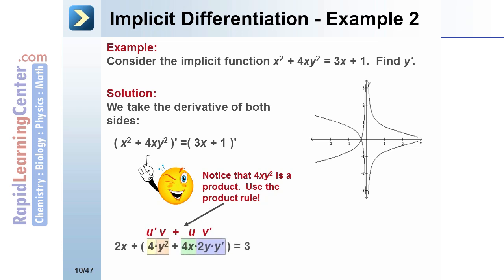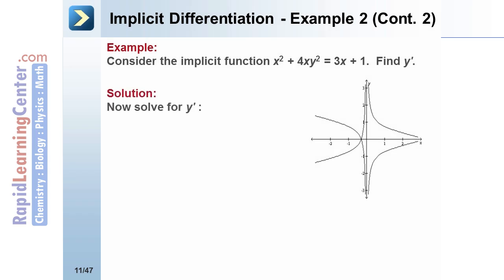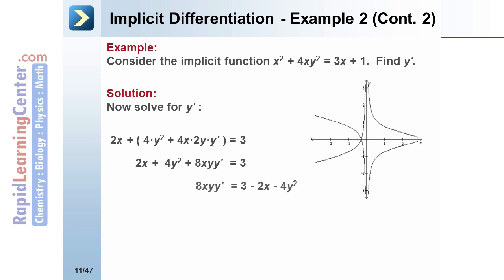This makes the derivative on the left side: 2x plus 4 times y squared plus 4x times 2y times y prime, and the derivative on the right side is 3. Simplifying, we get 2x plus 4y squared plus 8xy y prime equals 3. We move the 2x and 4y squared to the other side, then divide both sides by 8xy. This makes our derivative y prime equal to 3 minus 2x minus 4y squared, all divided by 8xy.